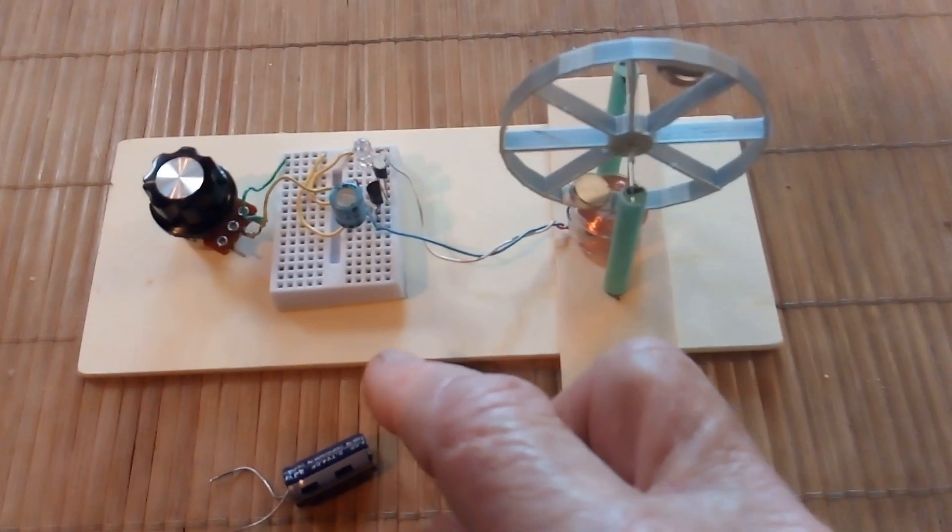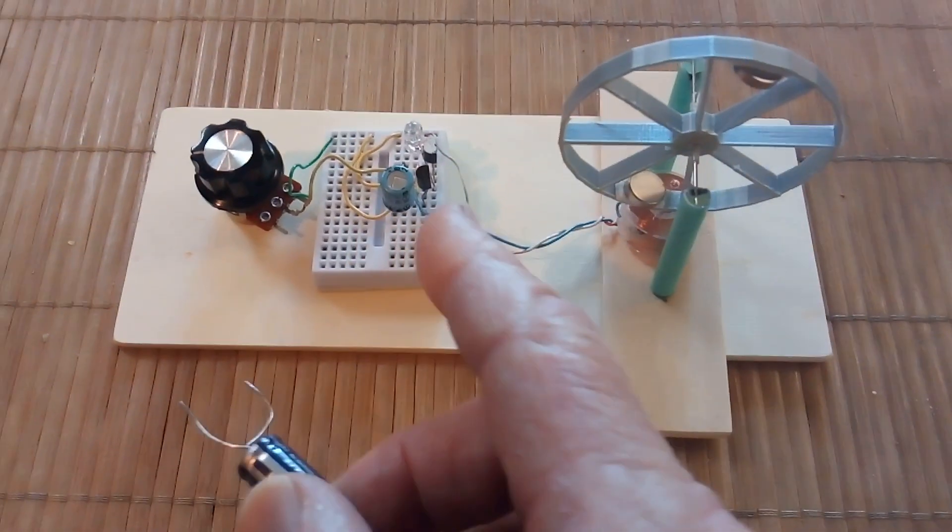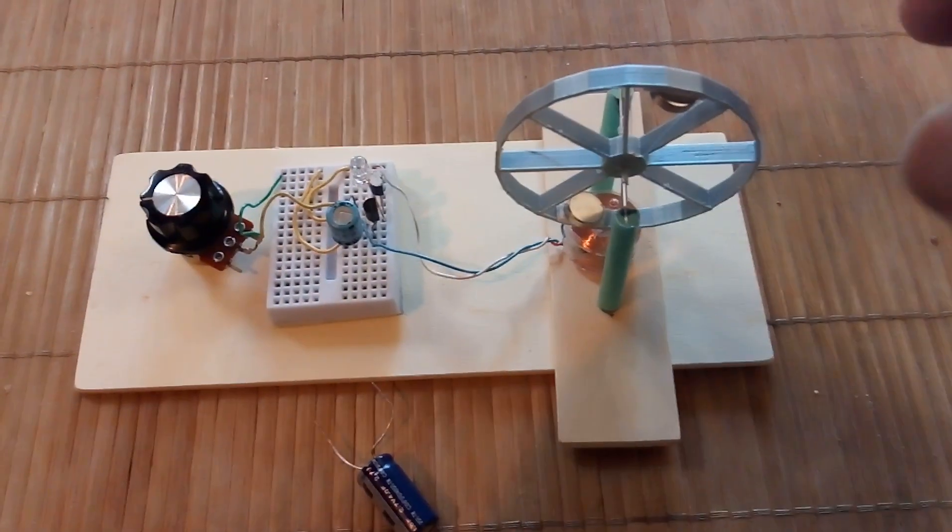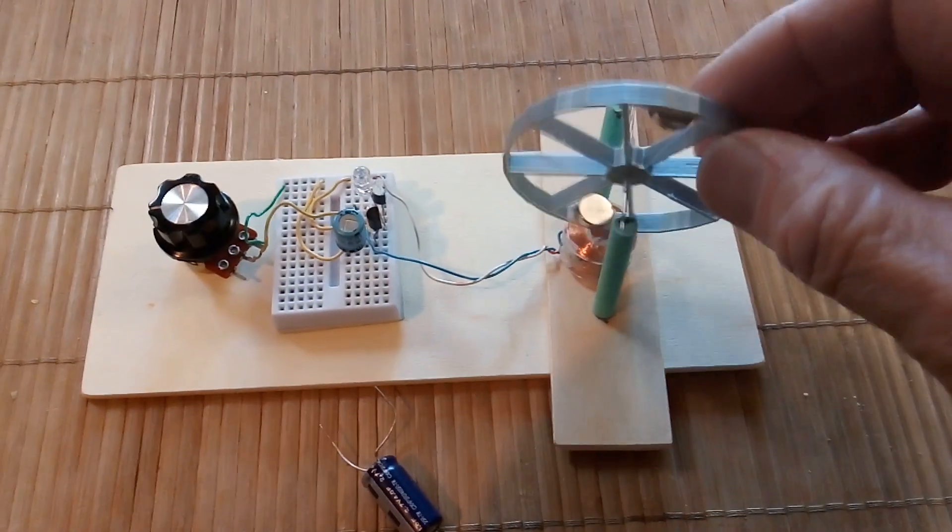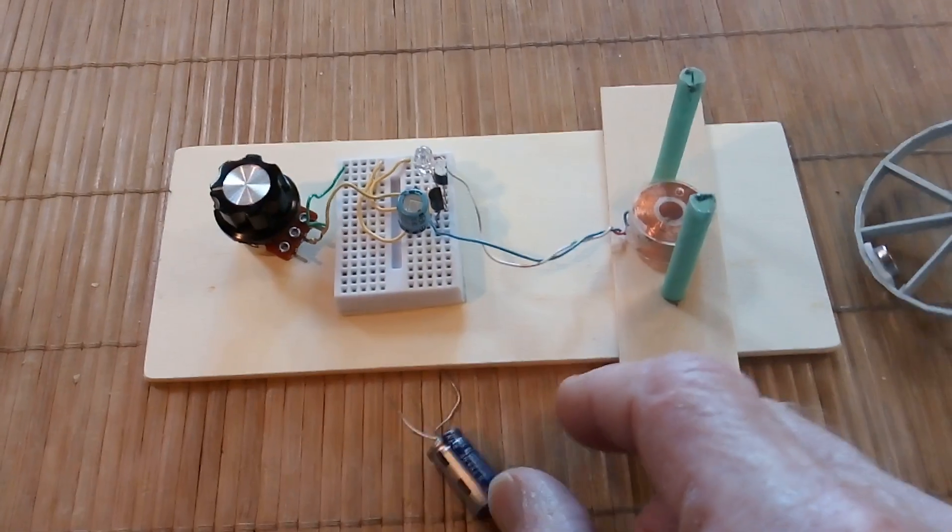And then this other thing here is this blinker circuit that I showed in my last video, and I'll give a link to that. It shows the circuit diagram and stuff. I did change the coil to 34 gauge finer wire for this project.